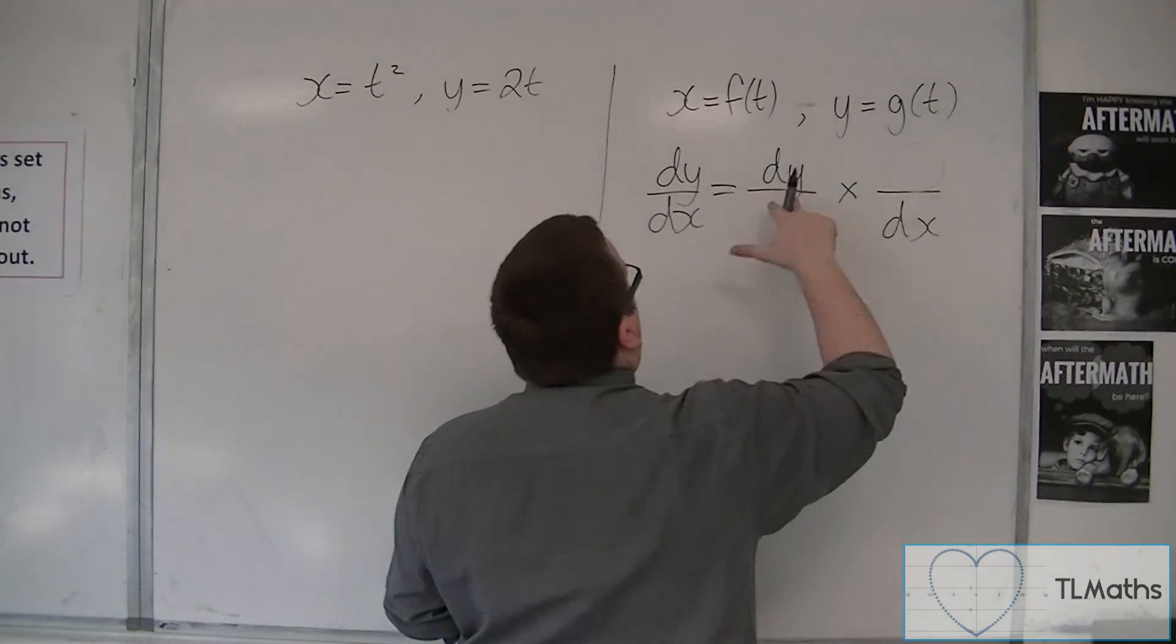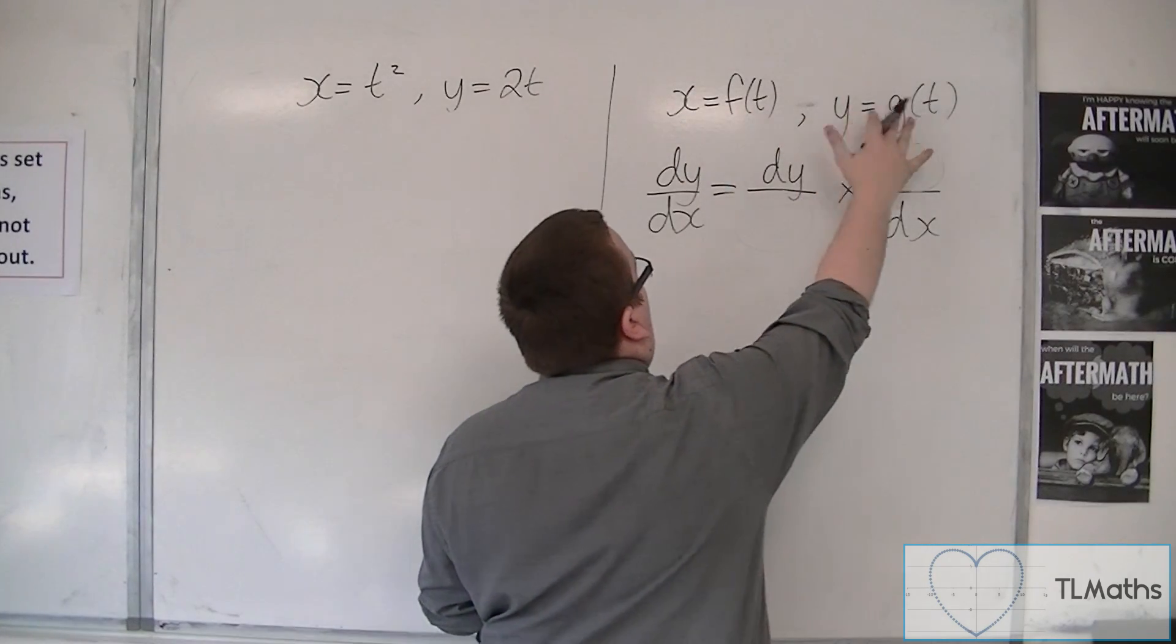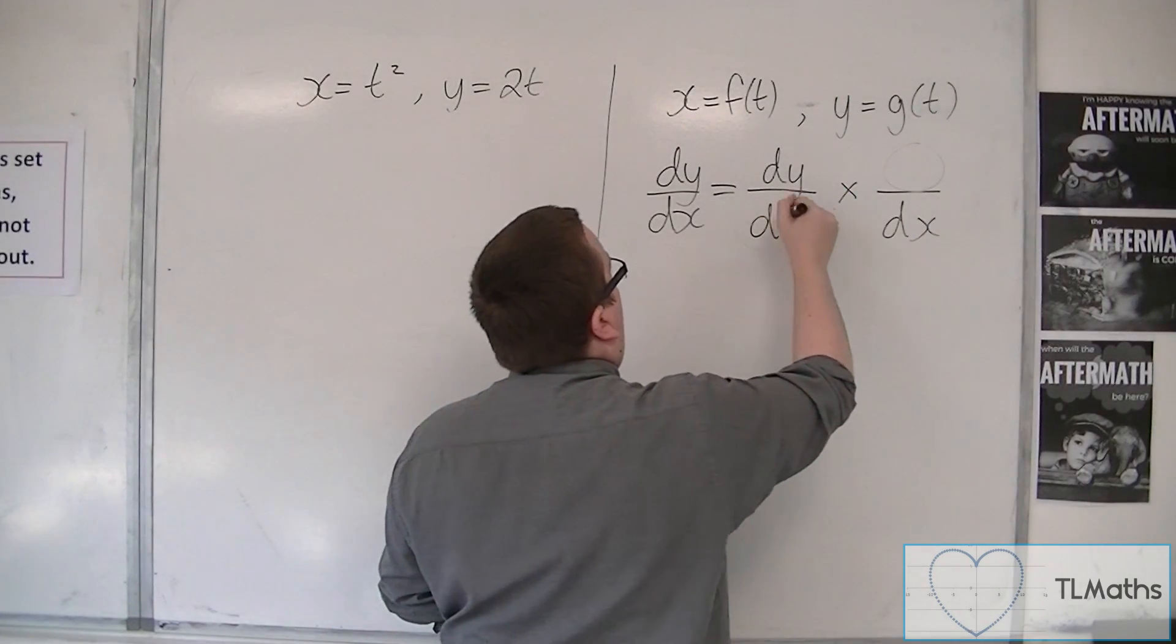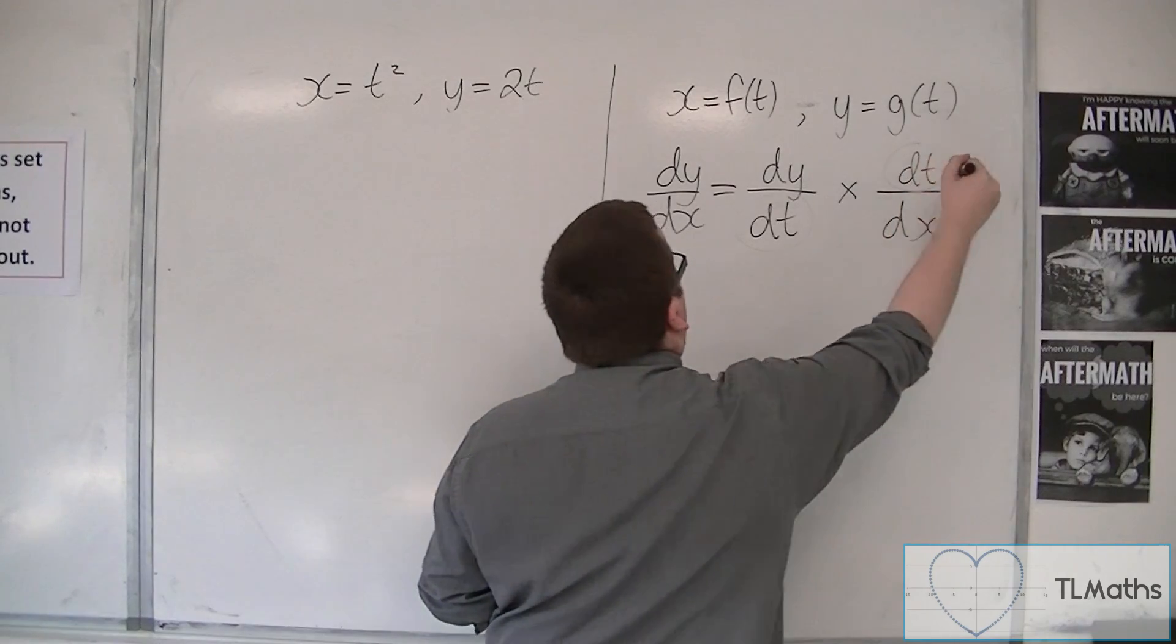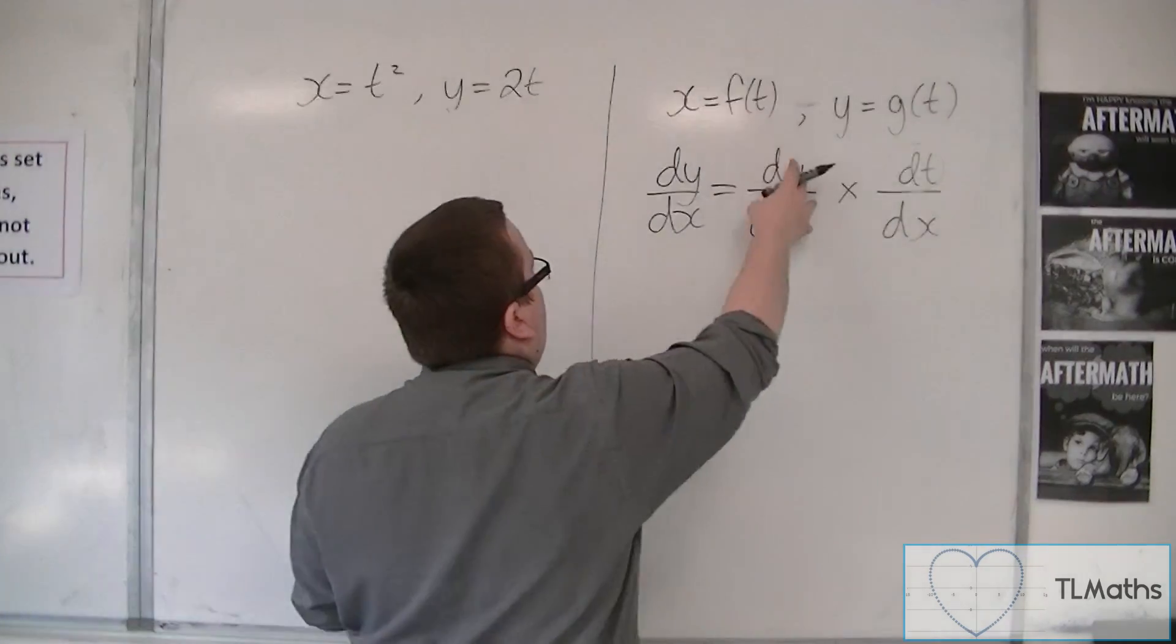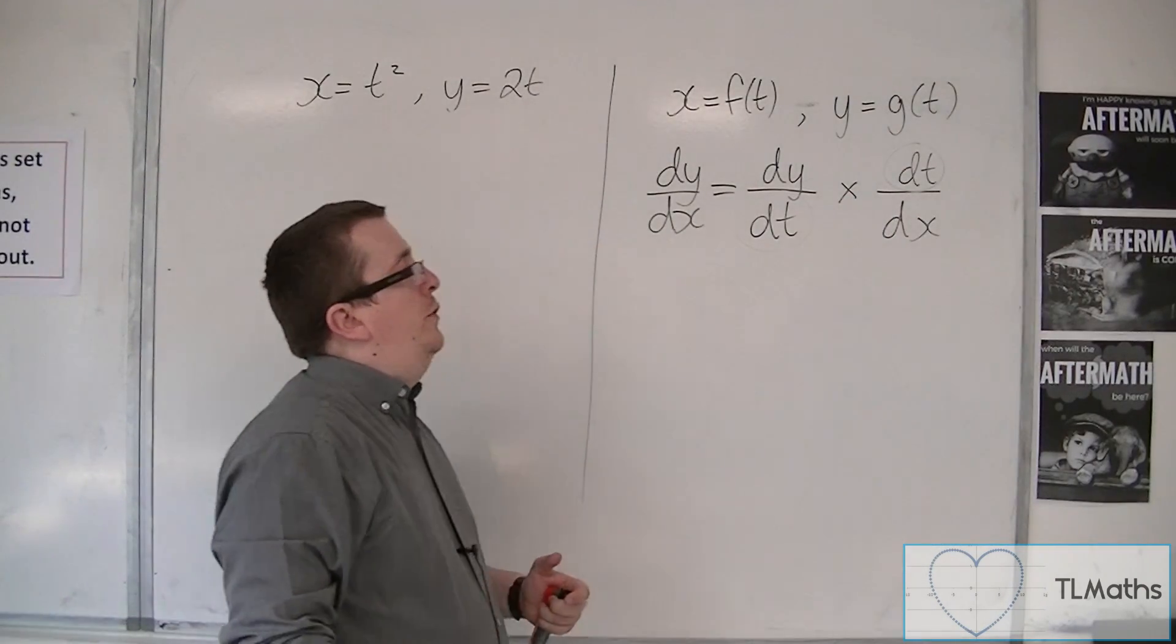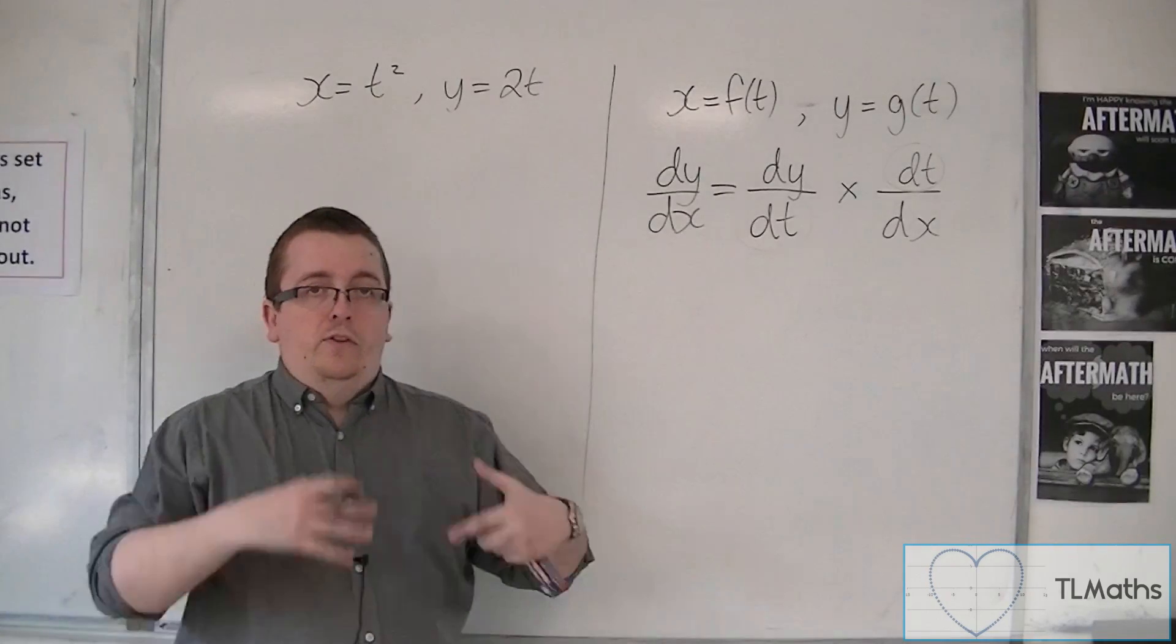So in order to get those bits, well, we can see that x is a function of t, and y is a function of t. So if these are both dt, then I can work out dy/dt and dx/dt, and find the reciprocal, and then I could use this formula.